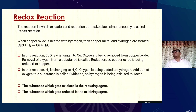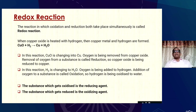The reaction in which oxidation and reduction take place simultaneously is called a redox reaction. When copper oxide is heated with hydrogen, copper metal and water are formed. In this reaction, copper oxide is changing to copper — oxygen is being removed from copper oxide, so copper oxide is being reduced to copper.